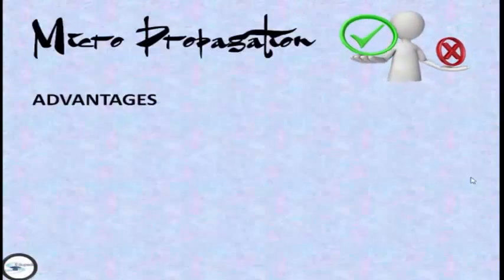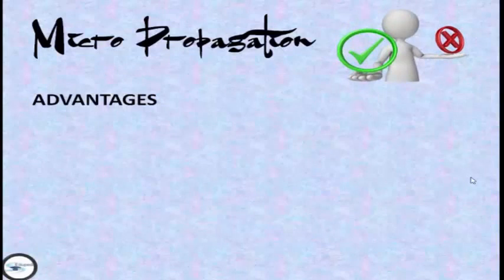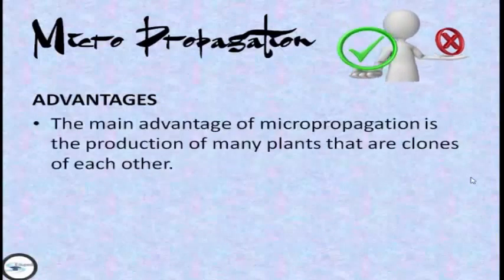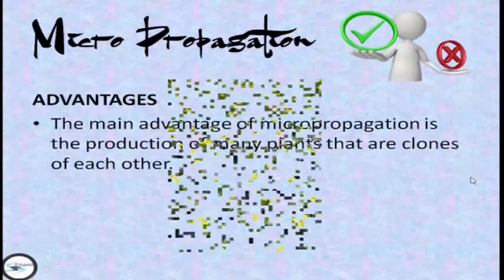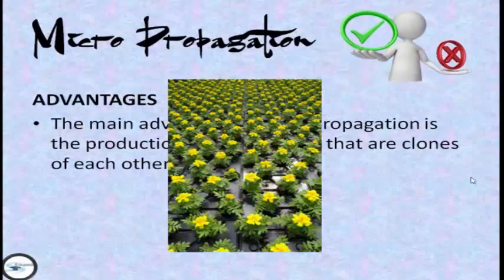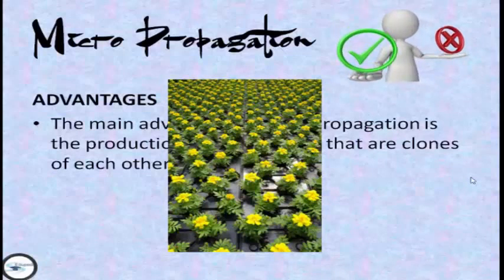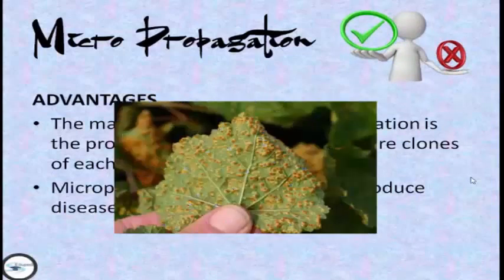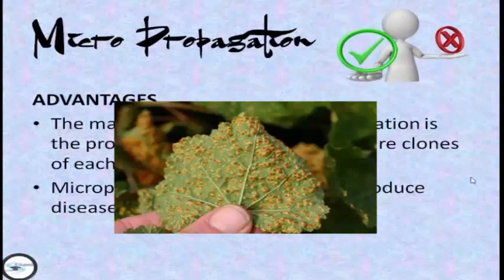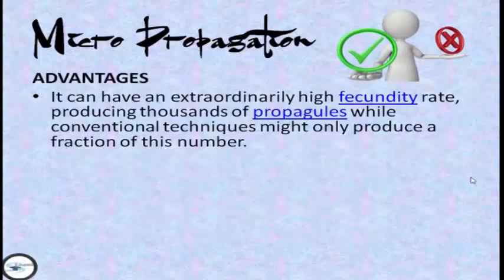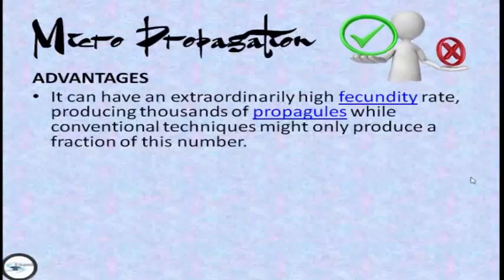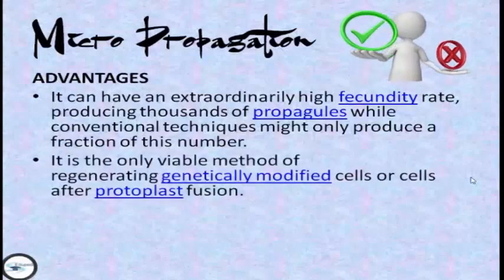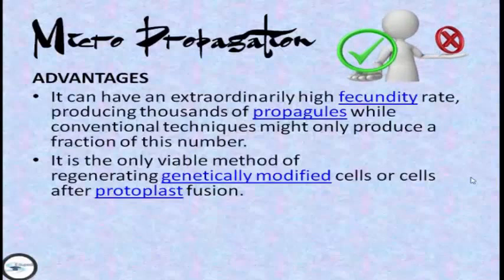There are also advantages and disadvantages to micropropagation. The advantages include the production of many plants that are clones of each other. So if a species is going to be endangered, using this process can prevent its loss. Micropropagation can also be used to produce disease-free plants. It can achieve extraordinarily high fecundity rates, producing thousands of propagules, while conventional techniques might only produce a fraction of this number. It is the only viable method of regenerating genetically modified cells or cells after protoplast fusion.